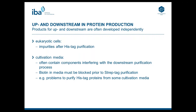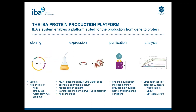Much worse is the problem when it comes to His-tag purification. We know that in many mammalian media you cannot purify His-tag proteins efficiently from mammalian supernatants. One reason is that components in many mammalian media interfere with the His-tag purification process. Furthermore, you often have impurities after His-tag purification because eukaryotic cells contain more host cell proteins with histidine residues, making purification more challenging. Providers often suggest a dialysis step or buffer exchange, but this costs much time and money.